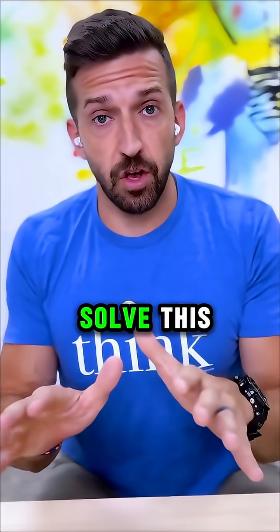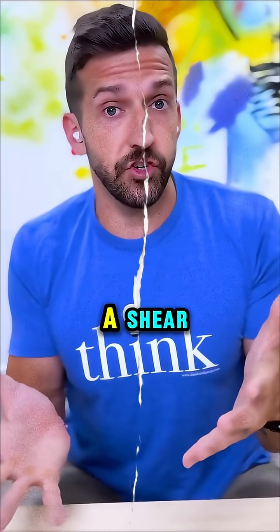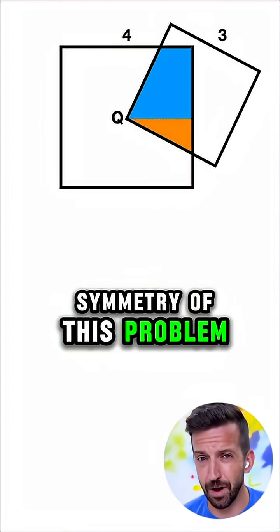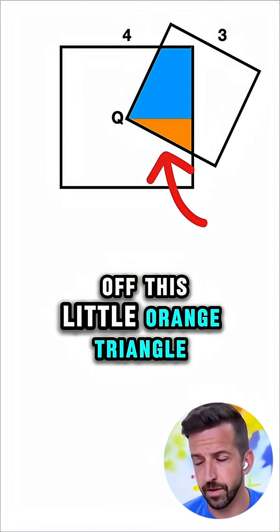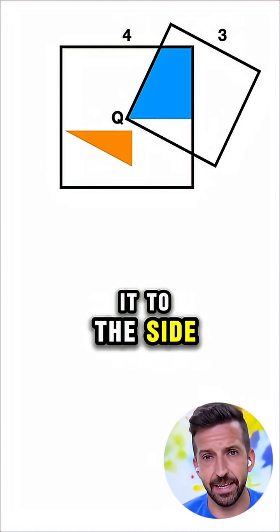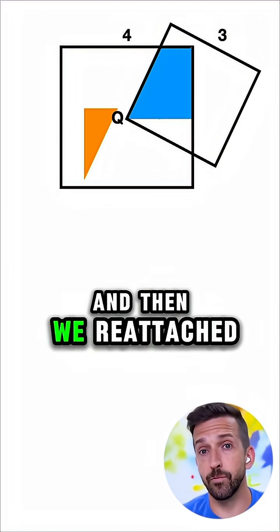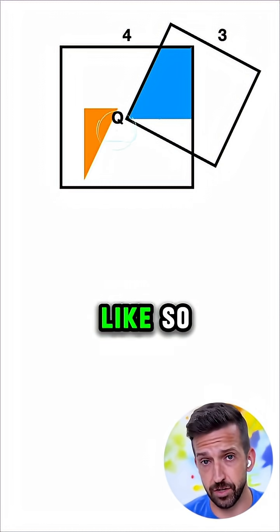There's many ways to solve this, but my favorite way involves the shear. So due to the symmetry of this problem, let's say we cut off this little orange triangle, we kind of shifted it to the side, we rotated it, and then we reattached it in the diagram like so.